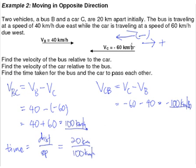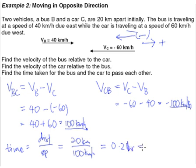This is not the individual speed of the bus or the car. From the calculator we get 0.2 hours, which translates to 12 minutes. So they will meet in 12 minutes.